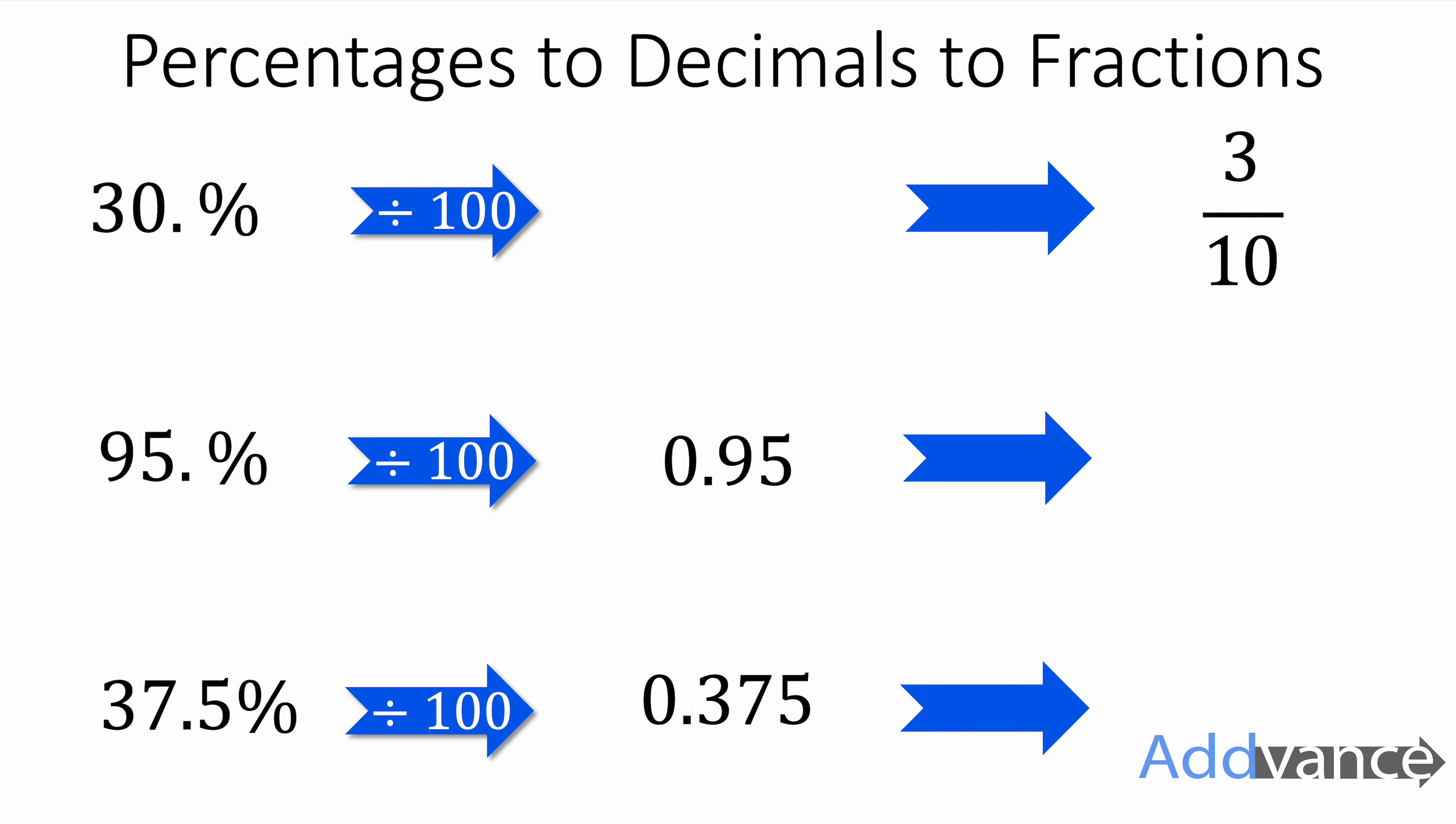0.3 is the same as 3 out of 10. That's just your place value. 0.95 is the same as 95 out of 100, which we can simplify. Divide by 5, we get 19 out of 20. You must always simplify your answer, otherwise you will lose marks in exams.